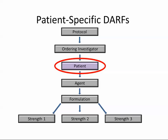Protocols that use patient-specific supplies — for example, placebo-controlled studies — are tracked by protocol and by patient. Patient-specific supplies use the Julian date and order number as the lot number. Refer to the protocol document if you are unsure whether agent supplies are patient-specific. Separate DARFs are required for each patient on that protocol, and each agent formulation and strength for that protocol must also have a separate DARF.